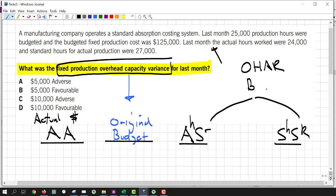Now that we know what we're looking for, we just start plugging the numbers in. A manufacturing company operates a standard absorption costing system. Last month, 25,000 production hours were budgeted. And budgeted fixed costs were 125. There's the first piece of info that I'm going to just plug right in here, 125.